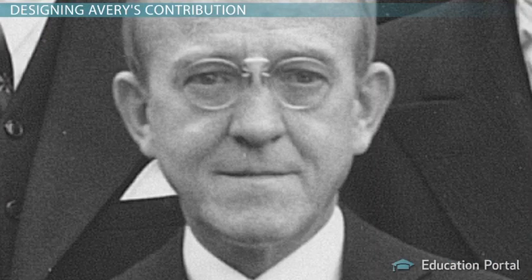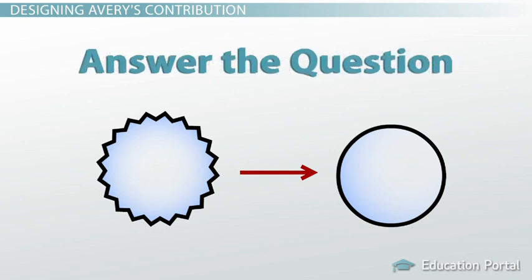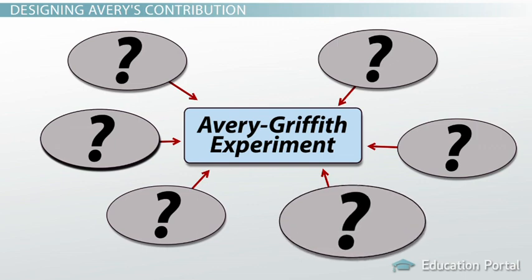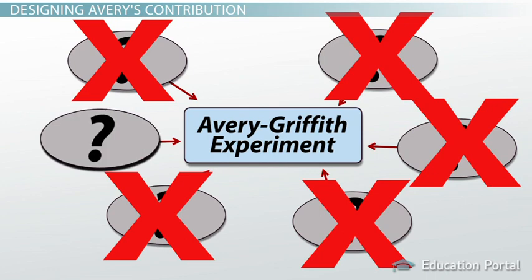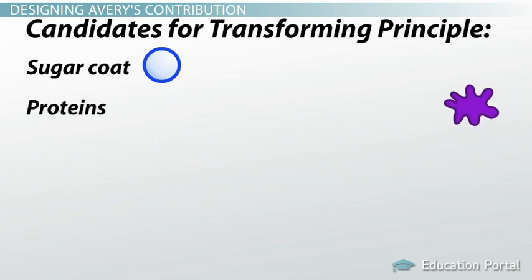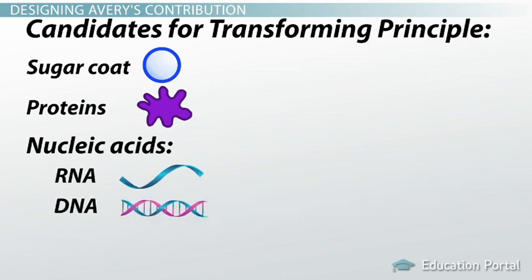Now it was time for Oswald Avery to take the stage. He made it his mission to continue Griffith's work and identify what that transforming principle was. Avery and his colleagues set out to design an experiment that would answer the question. Avery's list of candidates included the sugar coat on the S-cells, the bacterial proteins, and the bacterial nucleic acids, including RNA and DNA. Remember, scientists didn't know at this point that DNA was the genetic molecule — for Avery, it was just one of many possibilities.